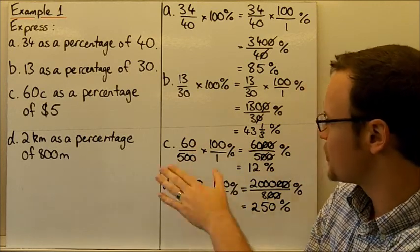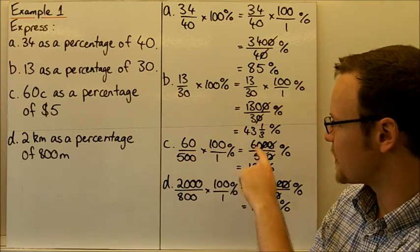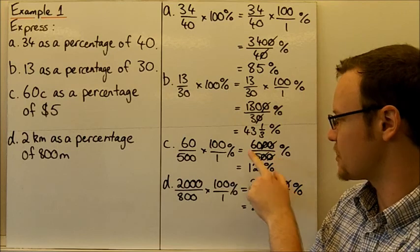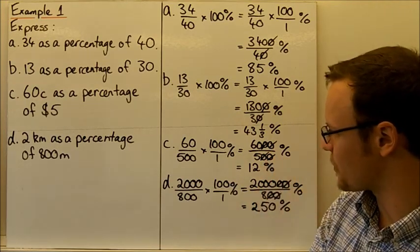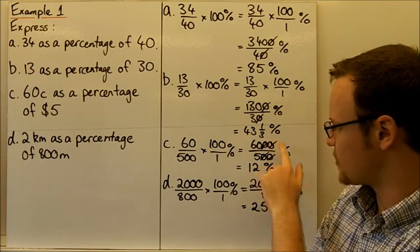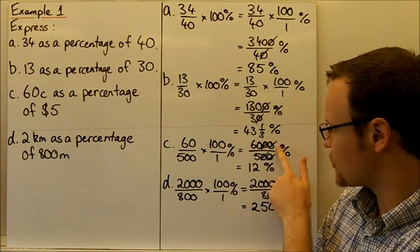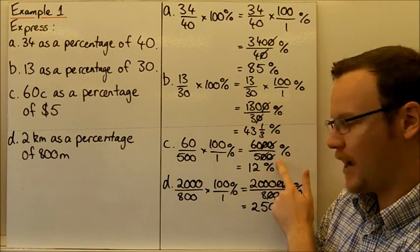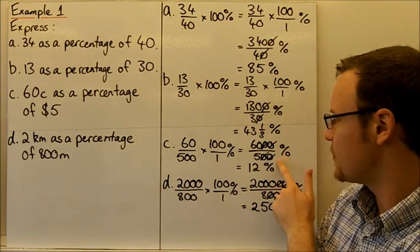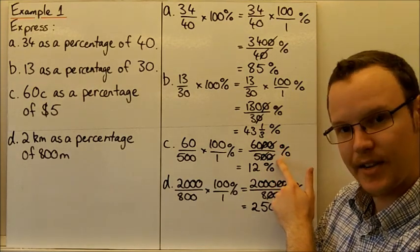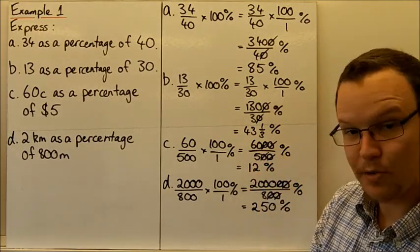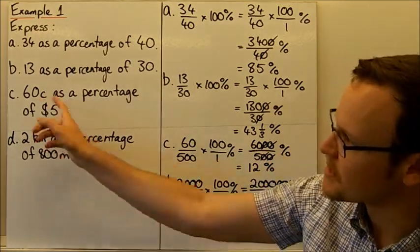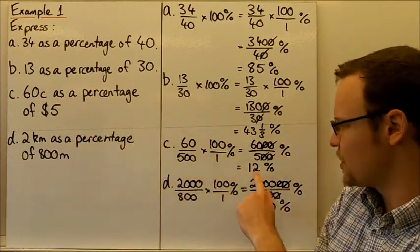So multiplying the top and bottom together, we get 6,000 over 500. And we can divide both the top and the bottom by 100, and that's why I've cancelled two zeros out on each line. I've divided the top by 100, and the bottom by 100. The numerator divided by 100, and the denominator divided by 100. So 60 divided by 5 is just 12%. So that means that 60 cents as a percentage of $5 is 12%.